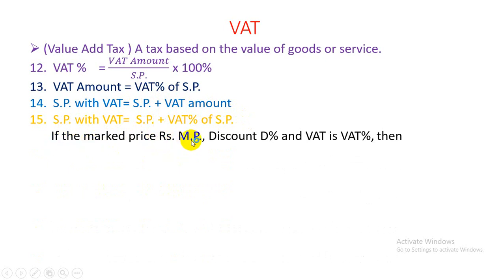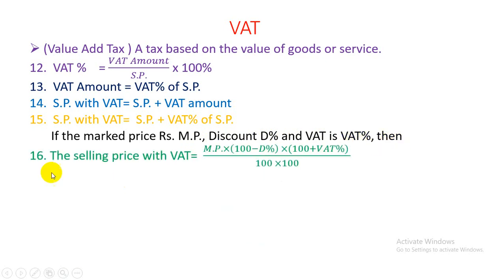If the marked price (MP), discount percent (D%), and VAT percent are given, then the selling price with VAT = MP × [(100 − D%) / 100] × [(100 + VAT%) / 100].